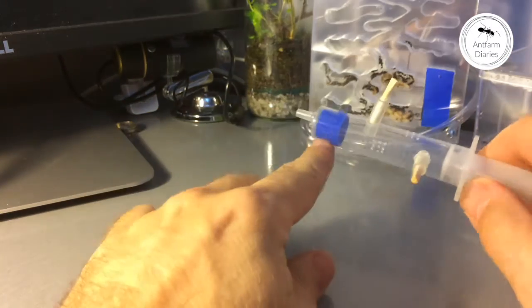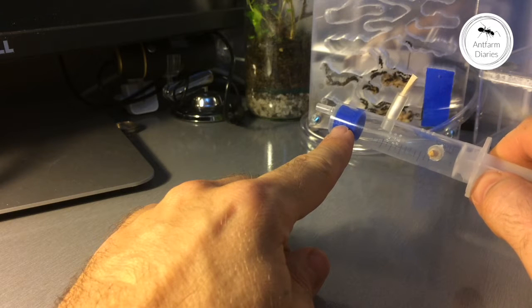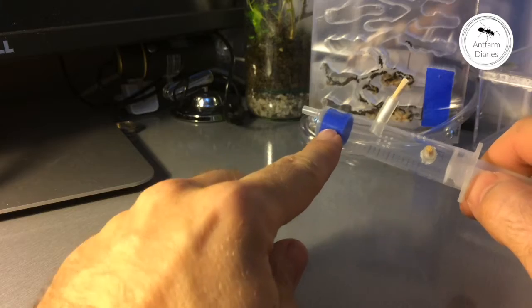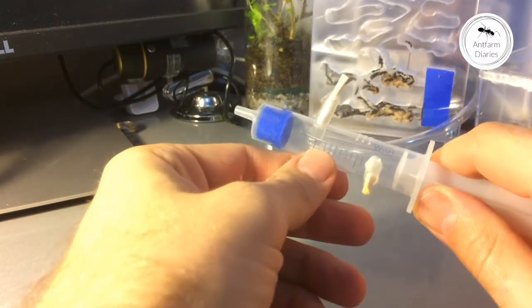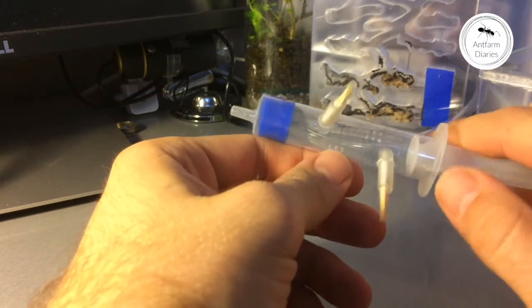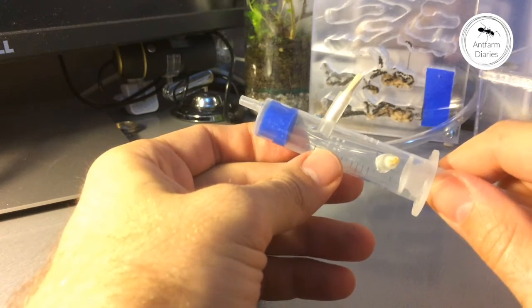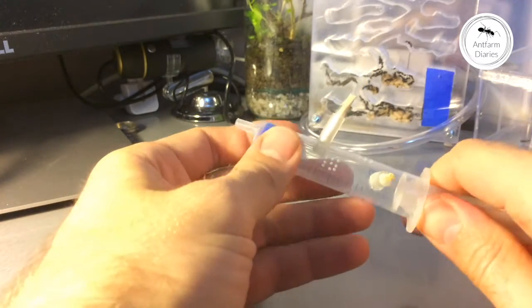Inside I've put the nano sponge, I guess it's called like that, so it's just a piece of regular mop head. And I poked few holes here and there with the syringe needle, just to get the oxygen inside of the syringe.